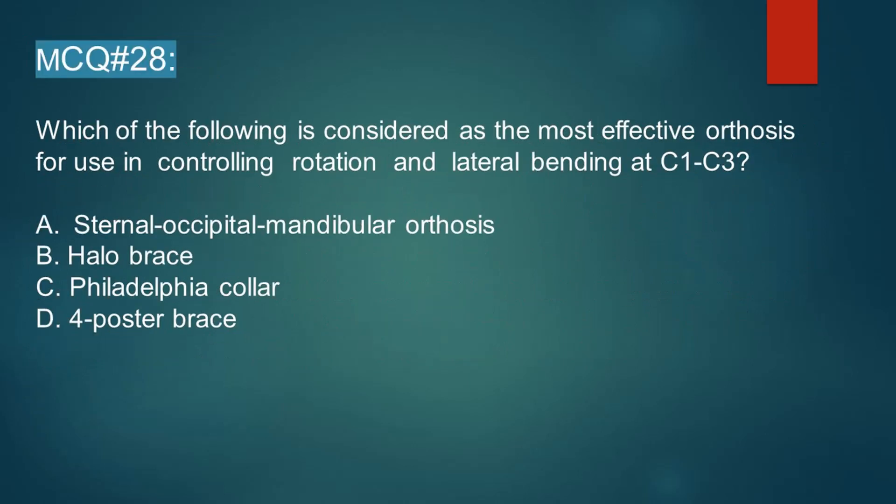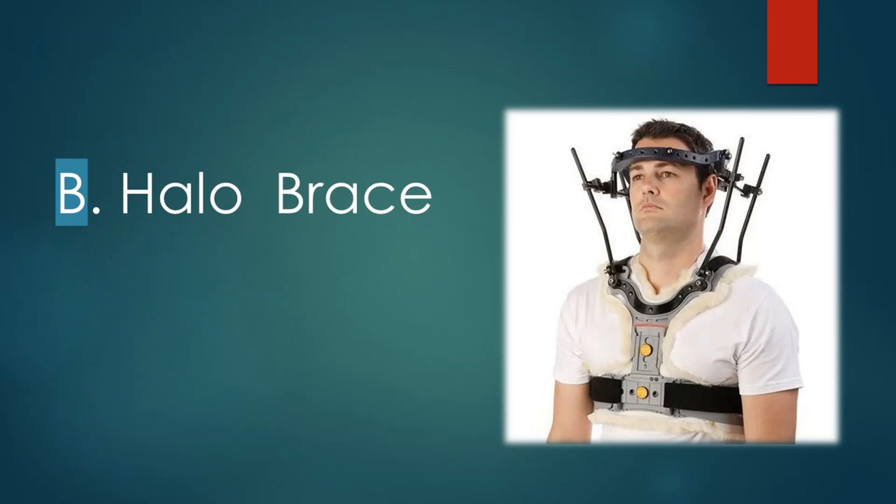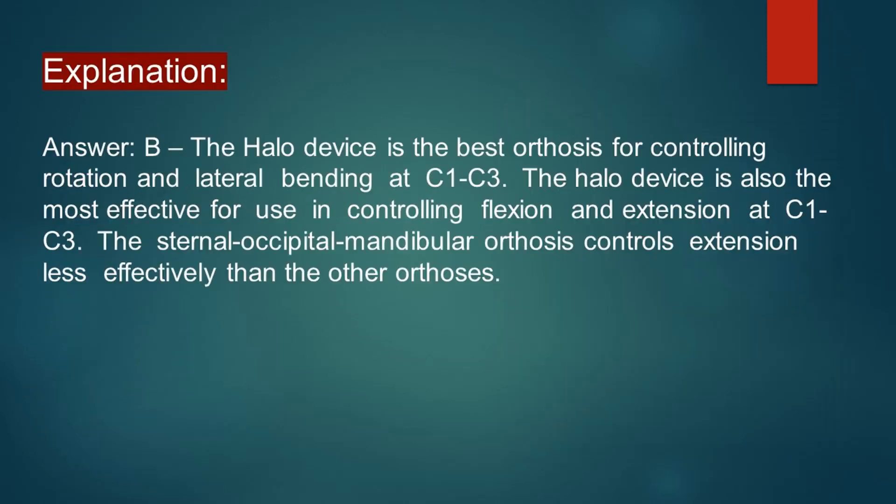Here we have Scenario 28: which of the following is considered the most effective orthosis for controlling rotation and lateral bending at the cervical spine, usually at C1 to C3? Option A: sternal occipital mandibular orthosis. Option B: halo brace. Option C: Philadelphia collar. Option D: four-poster brace. The correct answer is Option B, halo brace.